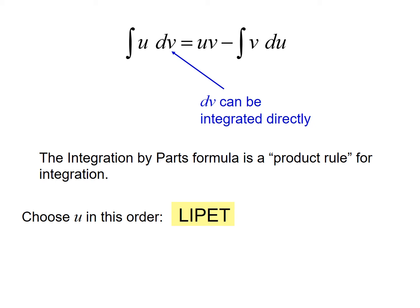We have an acronym here that helps us to choose which function to call u. It's LIPET, which stands for Logs Inverse Trig Polynomial Exponential Trig. So you look at the product within your integral and you identify the function that comes first. If you have a logarithm, that's u. If there's no logarithm but you have an inverse trig function, then that would be u, and so on.